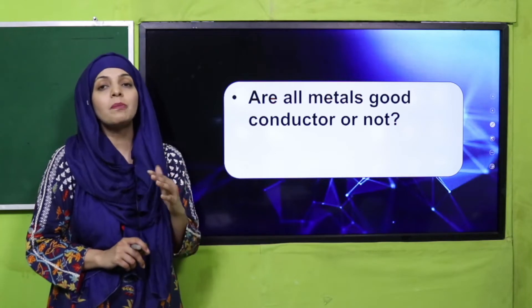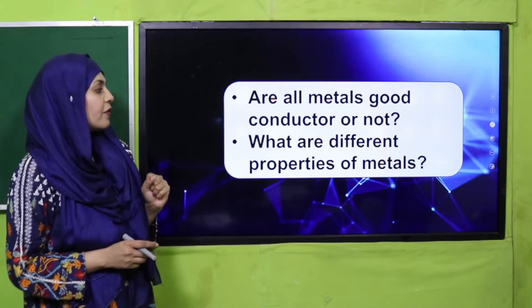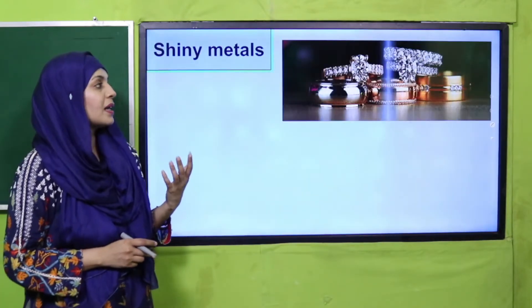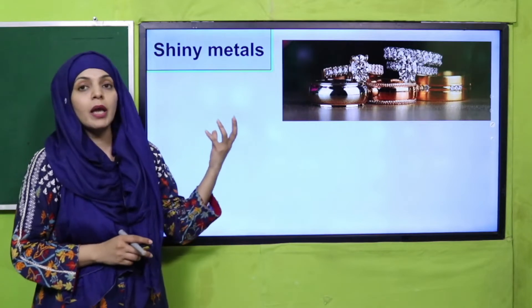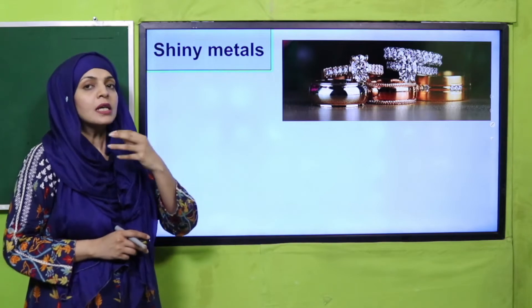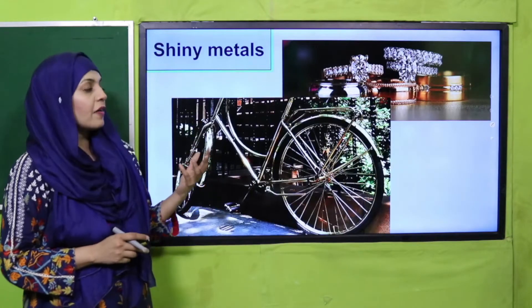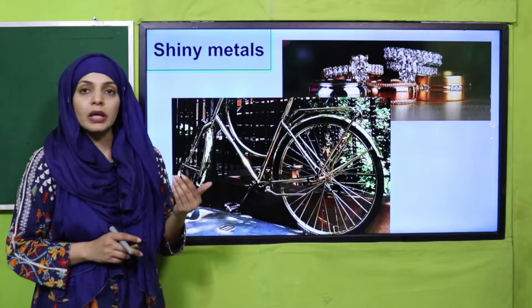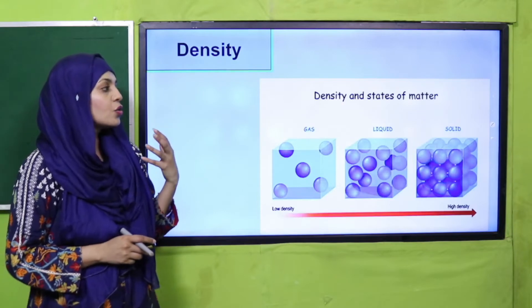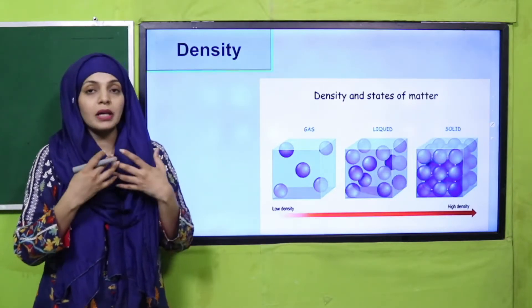Now let's look at the properties of metals one by one. Metals are usually shiny — chamakdaar hoti hain. For example, silver, gold, and copper — if you observe all of them, they are shiny. Steel and iron also look shiny. Density: the density of metals is higher because their particles are very tightly packed.